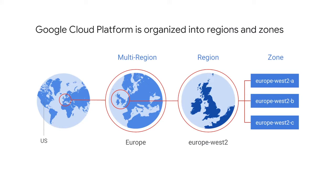Zones are grouped into regions, independent geographic areas, and you can choose what regions your GCP resources are in. All the zones within a region have fast network connectivity among them. Locations within regions usually have round trip network latencies of under five milliseconds.